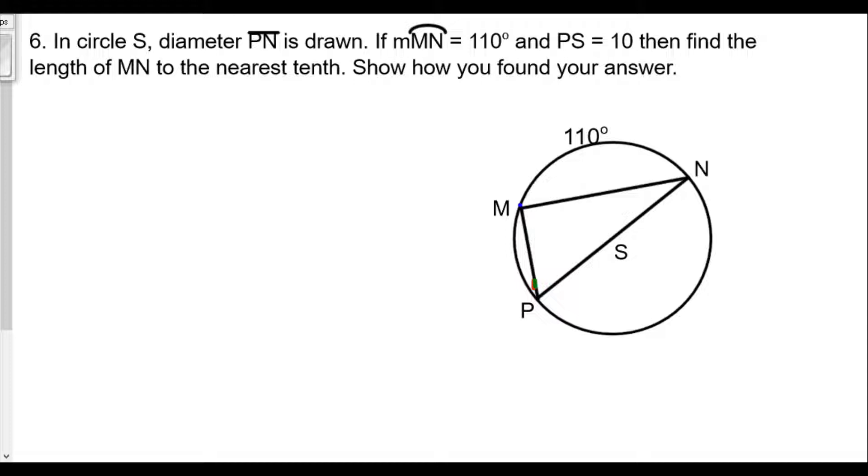So for number 6, circle S, diameter PN is drawn, the measure of arc MN is equal to 110 degrees and PS is equal to 10. So that's just a radius here, PS is 10.